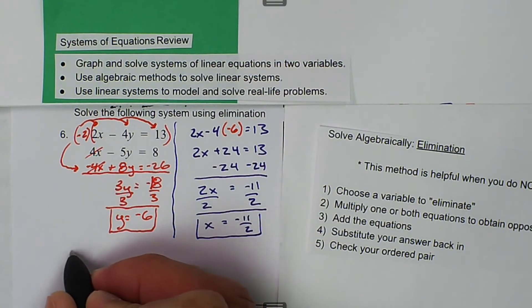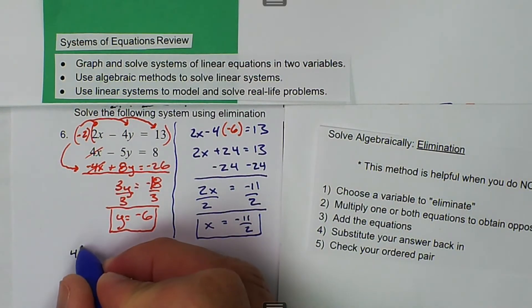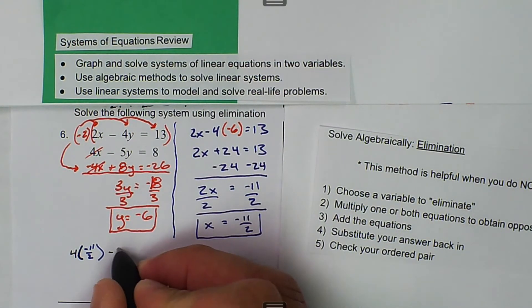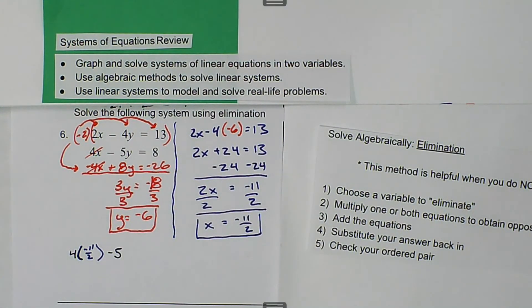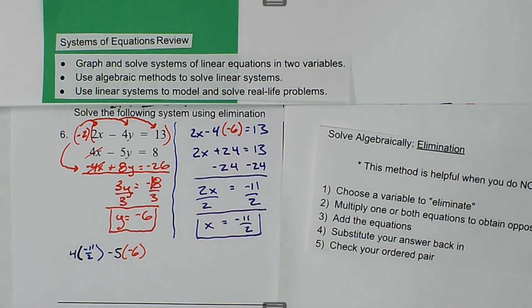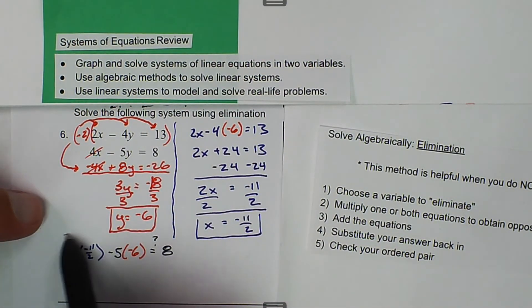So we have 4 times negative 11 over 2, we're going to say minus 5 times negative 6 equals 8, and we want to check to make sure that this is correct.